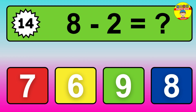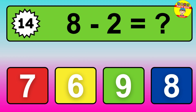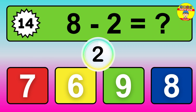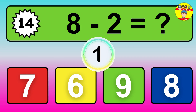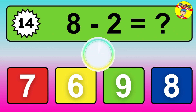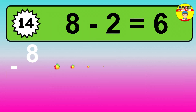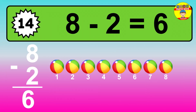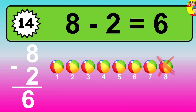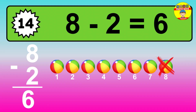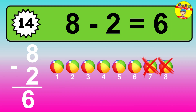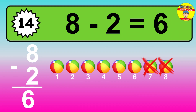Question 14: 8 minus 2 equals what? The answer is: 8 minus 2 is 6. Let's count it: 1, 2, 3, 4, 5, 6.